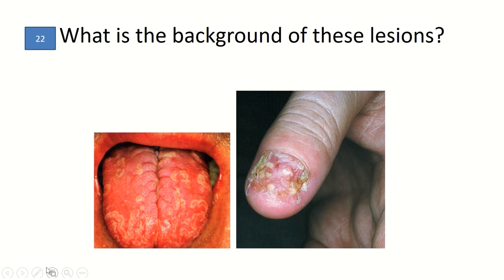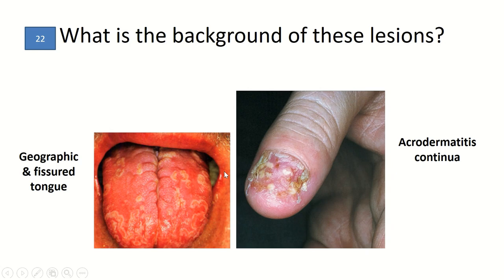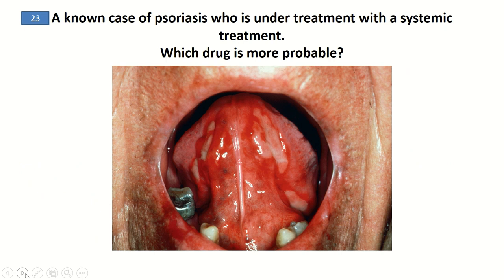There is a nail that is destroyed with pustules, indicative of acrodermatitis continua. Both geographic tongue and acrodermatitis continua are found in the background of psoriasis — specifically pustular psoriasis.